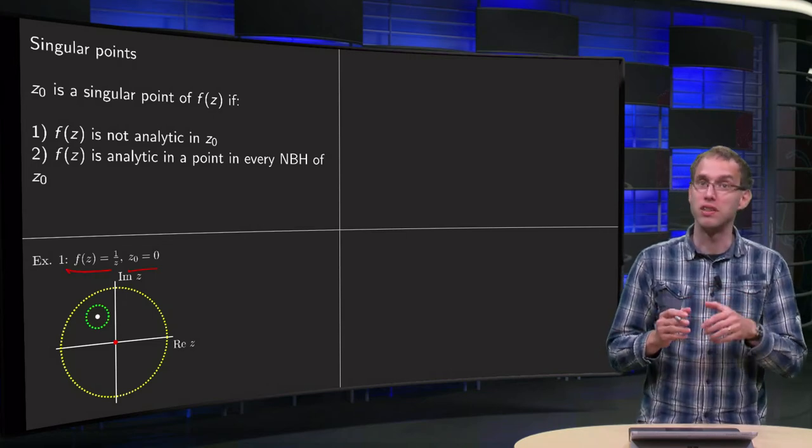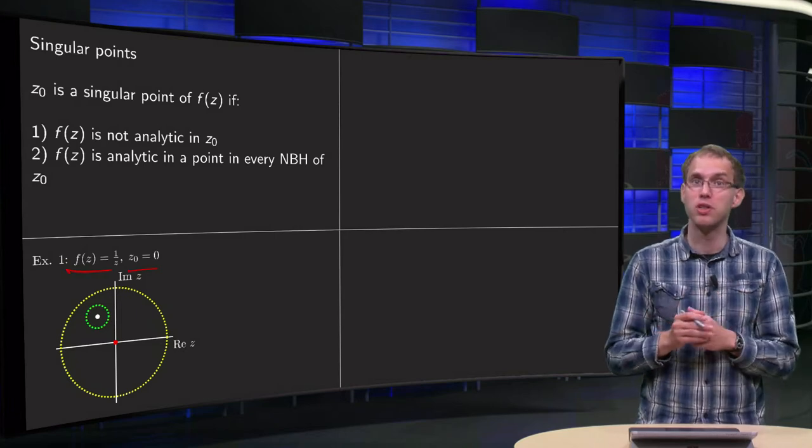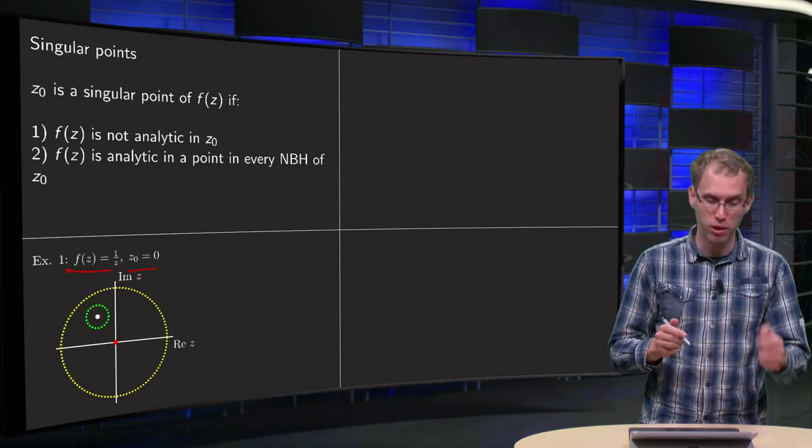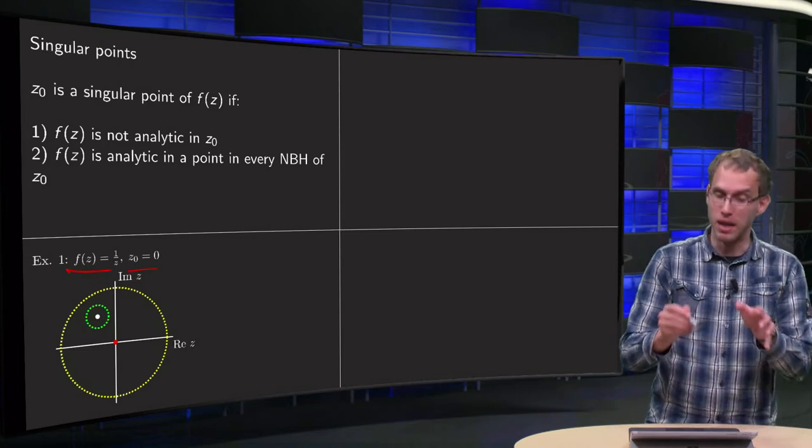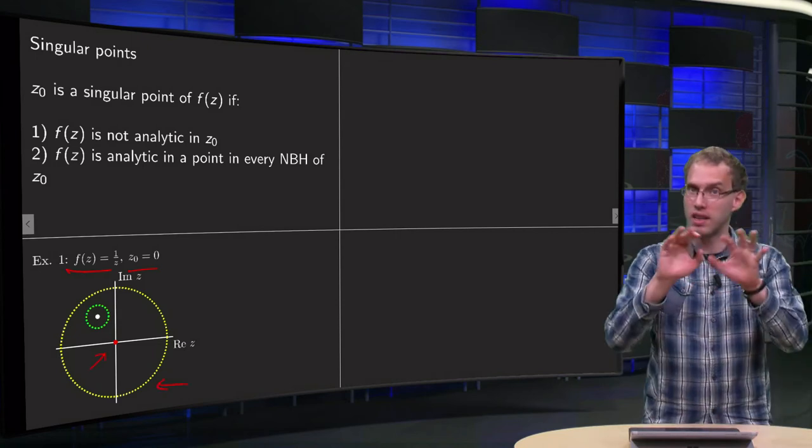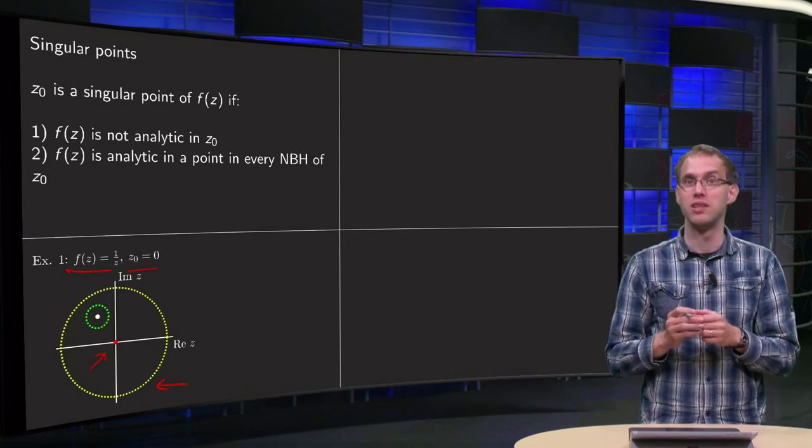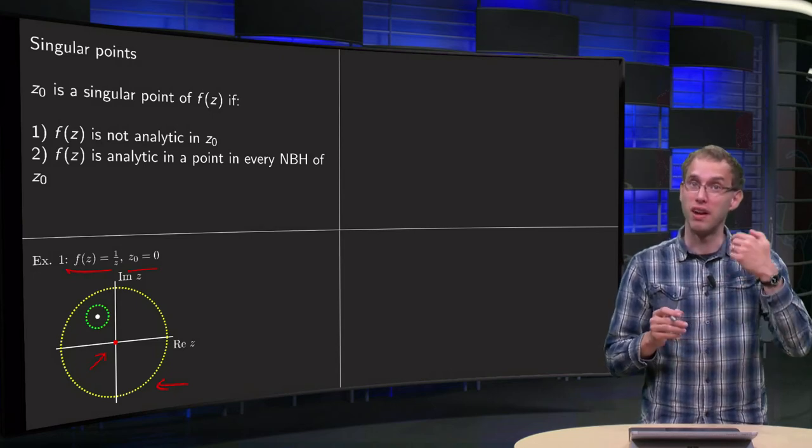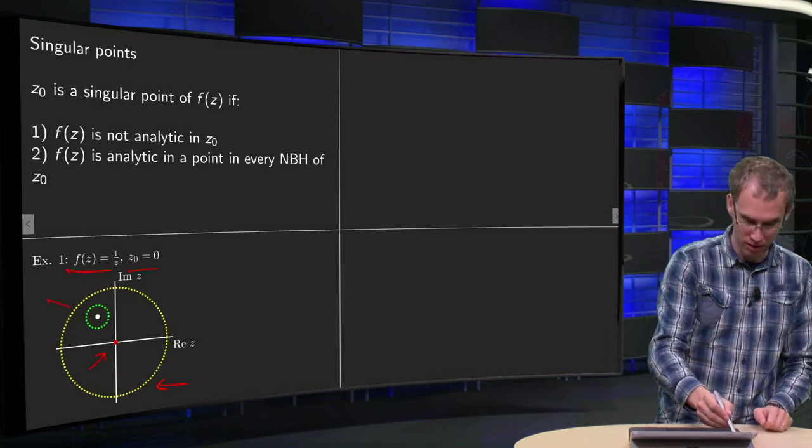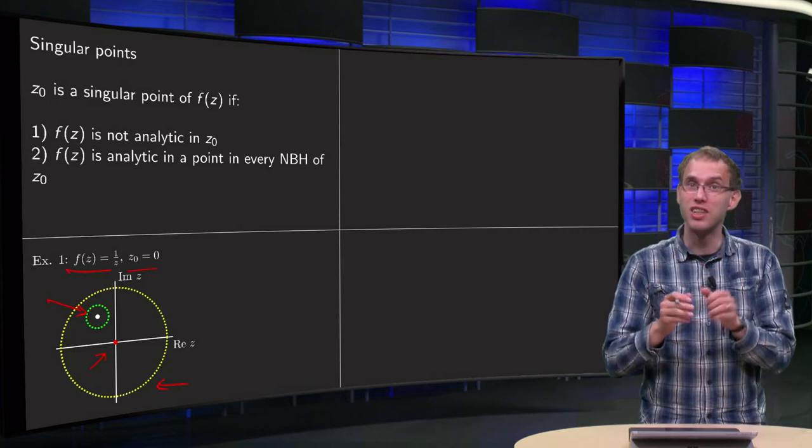We need to find another point in every neighborhood such that the function f of z is analytic in this other point. So we take a neighborhood of the 0, the yellow circle. We can take any yellow open circle. And then within this yellow circle, we will have to find another point and a green circle over here, such that f of z is analytic within this green circle.